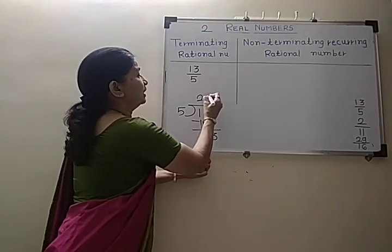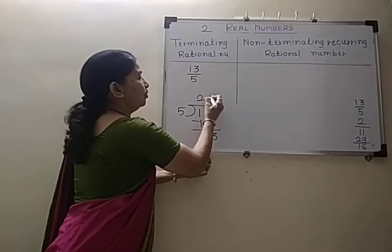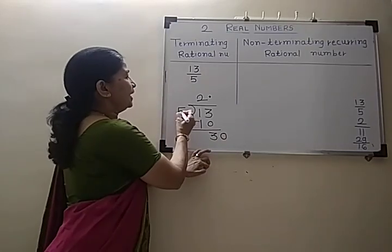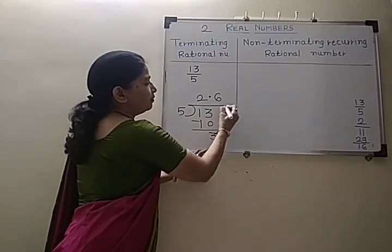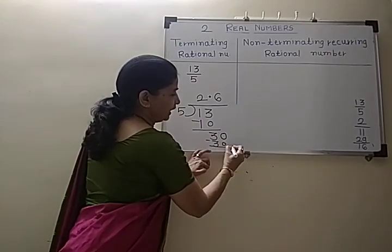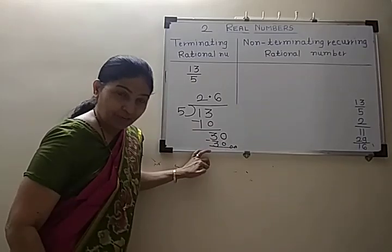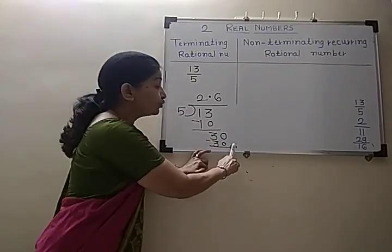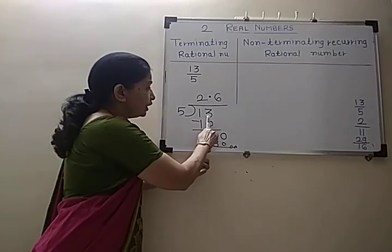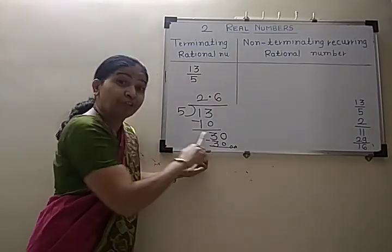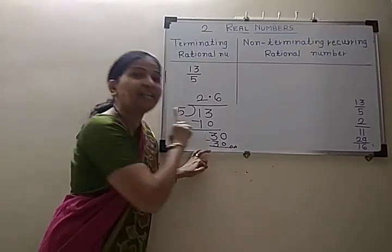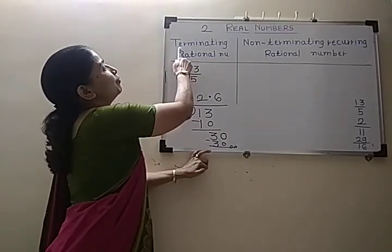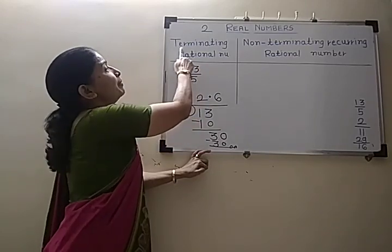There is nothing more to take, so we give a decimal point here. Now we can take a 0, making it 30. 5 goes into 30 six times — 5 times 6 is 30 — so the remainder coming is 0. This means the process of division is completing here. It stops here, so this one is terminating.